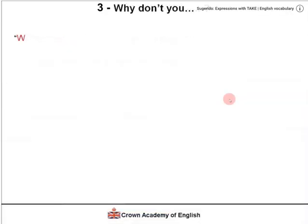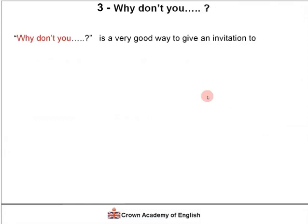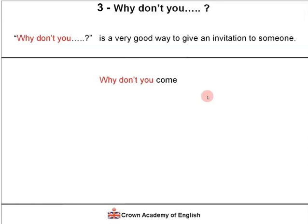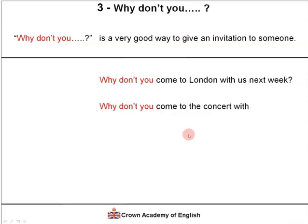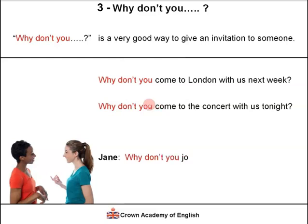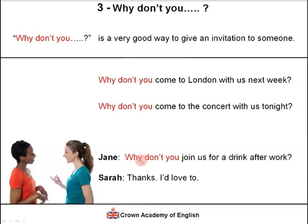'Why don't you' is a very good way to give an invitation to someone. For example: why don't you come to London with us next week? Why don't you come to the concert with us tonight? Jane says: why don't you join us for a drink after work? Sarah replies: thanks, I'd love to. So Jane is inviting Sarah for a drink after work.